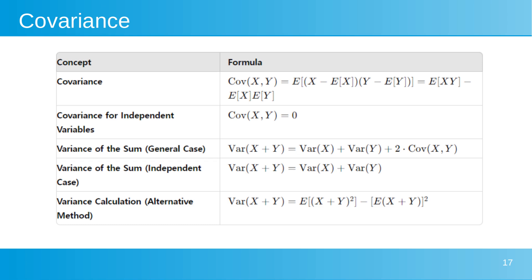Covariance quantifies the degree to which two random variables change together and is defined as Cov(X,Y). This measure indicates if an increase in one variable corresponds to an increase or decrease in another. If X and Y are independent, their covariance is 0, because the expectation of their product equals the product of their individual expectations. For the variance of a sum in general: Var(X+Y) = Var(X) + Var(Y) + 2*Cov(X,Y). For independent variables, the covariance term drops out, simplifying to Var(X+Y) = Var(X) + Var(Y). An alternative way to compute variance involves finding the expected value of the squared sum and subtracting the square of the expected sum.